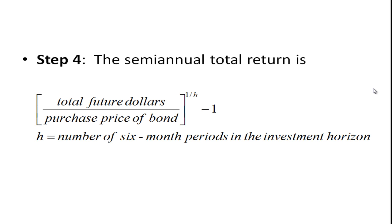And h is the number of six-month periods in the investment horizon. If you did this annually, then you divide by one over the number of years in the investment horizon.